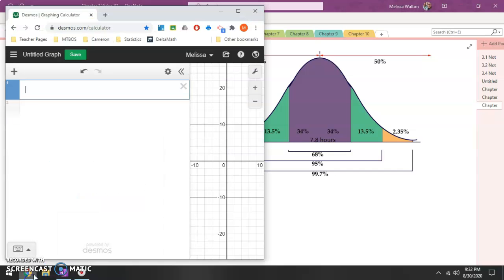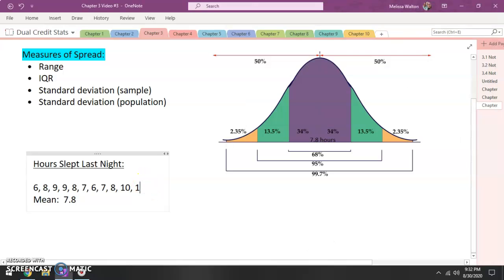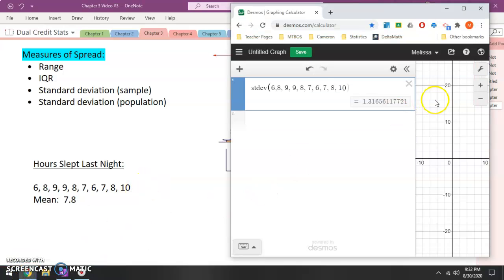All right, so here we go. We can calculate this using standard deviation in Desmos. Remember this is Desmos.com calculator. So STDEV, standard deviation, that is the command for standard deviation. STDEV and you can go ahead and type in your values. We have 6, 8, 9, 9, 8, 7, 6, 7, 8, 10. And I'm actually going to throw out 16 for now but we will go ahead and throw that in here in a bit.